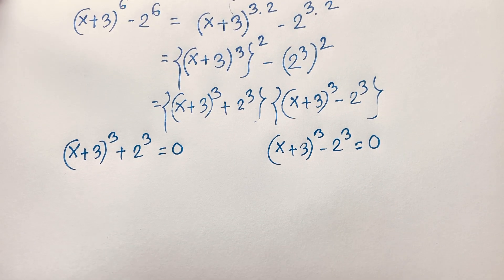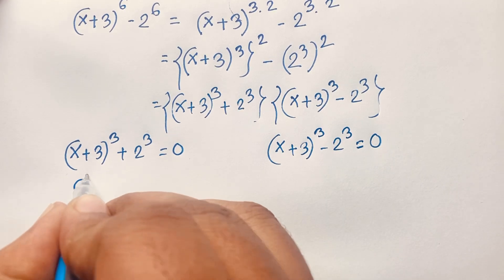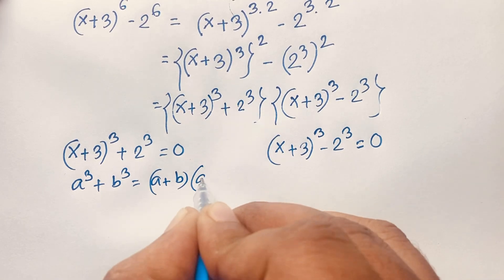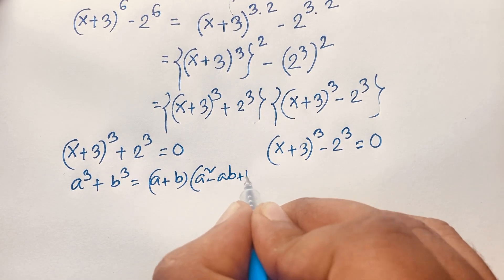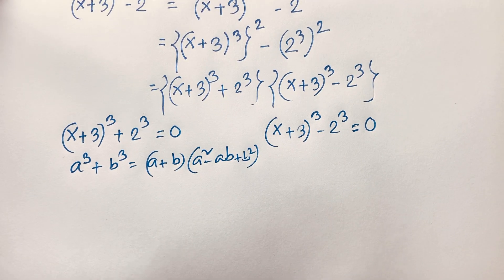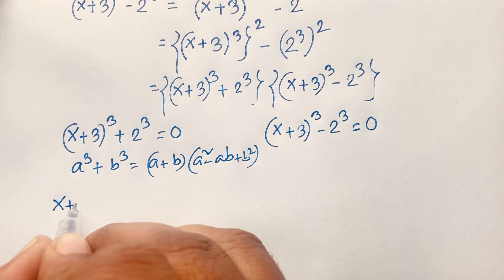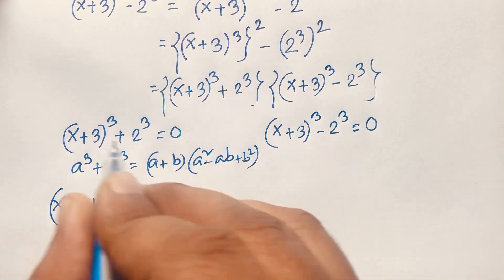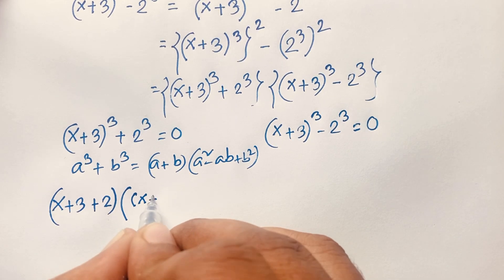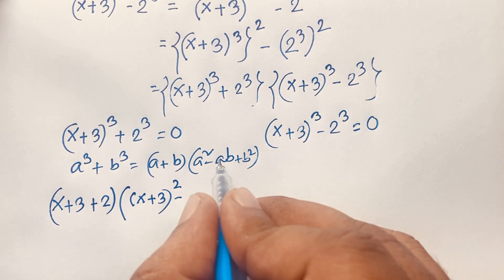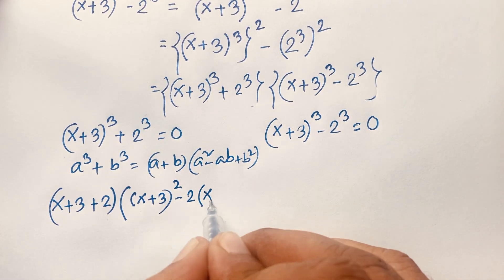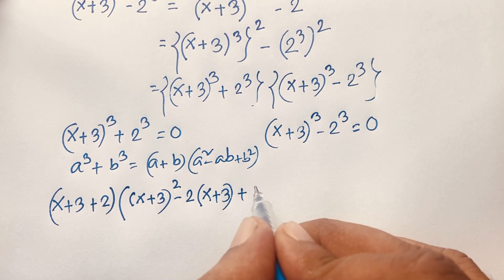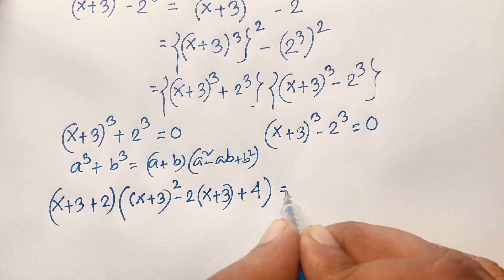Now at this moment, I can see that this is a and this is b. One of the laws: a³ + b³ = (a+b)(a² − ab + b²). According to this law, I can see this expression. It will be (x+3) plus 2, times (x+3)² minus 2×(x+3) plus 2², which is 4, equals 0.